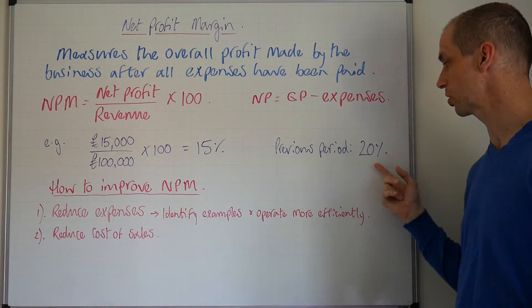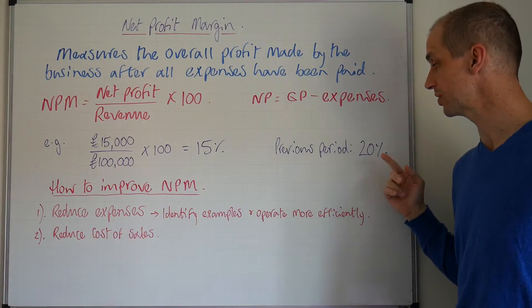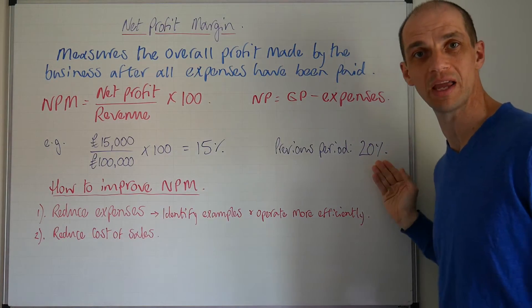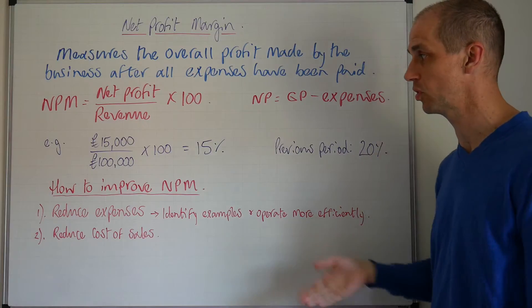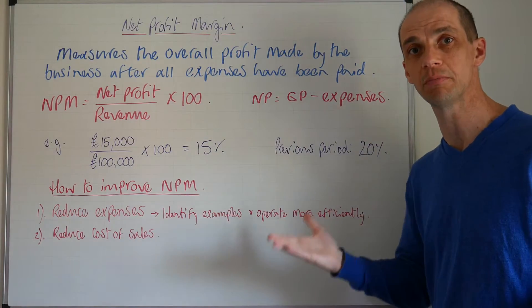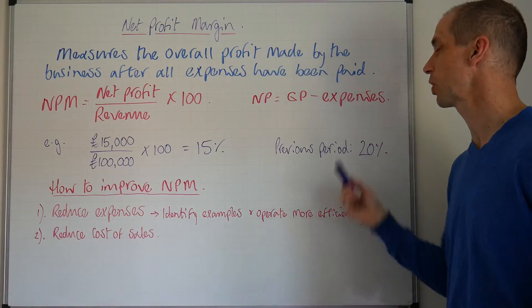If we look at the previous period here, we can see they were making a twenty percent net profit margin. Now they're only making fifteen percent. So what's going on?